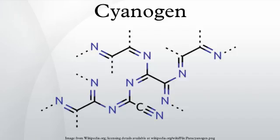Cyanogen is the chemical compound with the formula C2N2. It is a colorless, toxic gas with a pungent odor. The molecule is a pseudohalogen. Cyanogen molecules consist of two CN groups and are analogous to diatomic halogen molecules, such as Cl2, but far less oxidizing. The two cyano groups are bonded together at their carbon atoms, N≡C-C≡N, although other isomers have been detected.